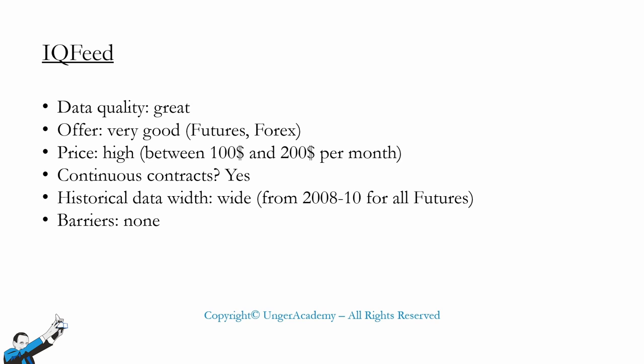Let's move on to IQ Feed, which is another data feed that I've personally used and found to be very good. The data quality is very, very good — they are famous precisely for the quality and reliability, as well as for the speed of reading and executing this data. The offer is also really very good because it includes everything that systematic traders need: futures and forex. The cost is high; unlike TradeStation which costs around $30 a month, you can spend between $100 to $200 per month with IQ Feed, depending on the markets you decide to sign up for.